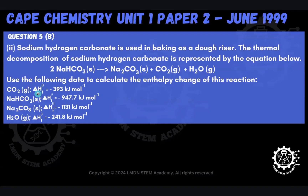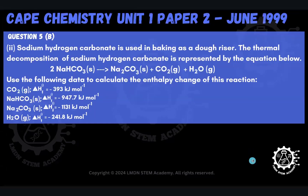The data provided are standard enthalpy of formation values for each species: a formation value for carbon dioxide, for sodium hydrogen carbonate, for sodium carbonate, and for steam. In our previous part 5A, we discussed what the enthalpy of formation was, and here we're being asked to use those formation values to find the enthalpy change of this reaction.